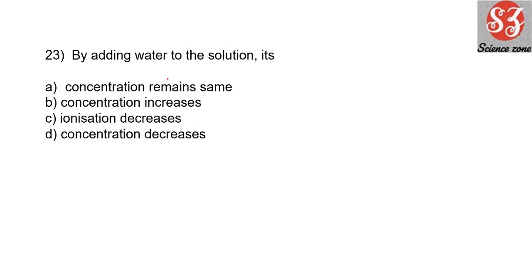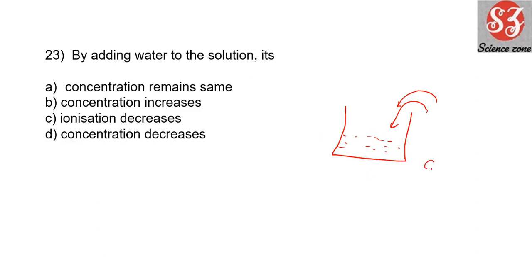Next: 'By adding water to the solution, its...' Suppose you have a particular sugar-and-water solution and you keep adding more water — the solution becomes dilute, because the amount of solute is decreasing relative to the increasing solvent. Concentration decreases. That is option D.